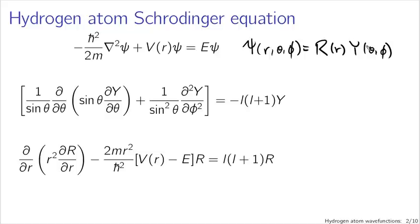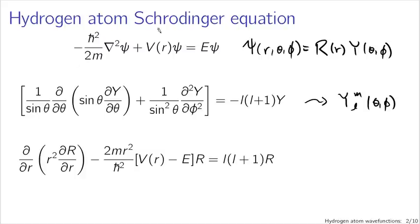Our angular equation, the result of separation of variables, is complicated, but the solutions we got after repeating the separation of variables — separating theta and phi — were the spherical harmonics, Y_lm of theta and phi. This angular equation is something that appears many times in treatments of partial differential equations like the Schrödinger equation in three dimensions in spherical coordinates.